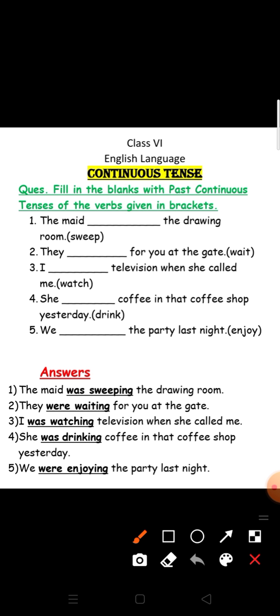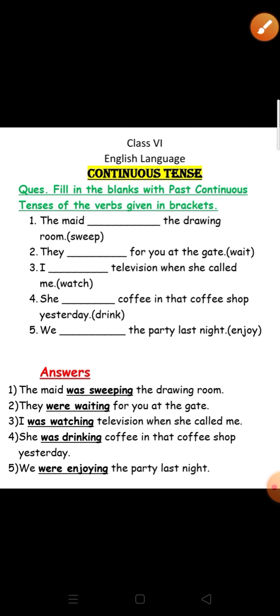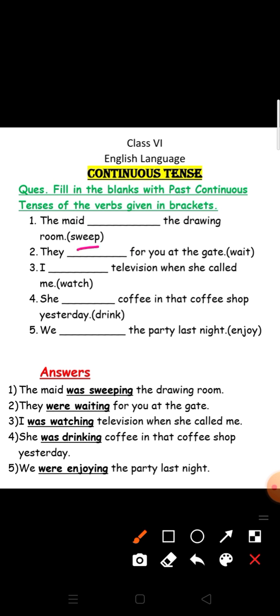As you know, in past continuous tense when the subject is singular, we use the helping word 'was'. Here the subject is singular, so we will use 'was' and the present participle of sweep is 'sweeping'. So it will be: the maid was sweeping the drawing room.